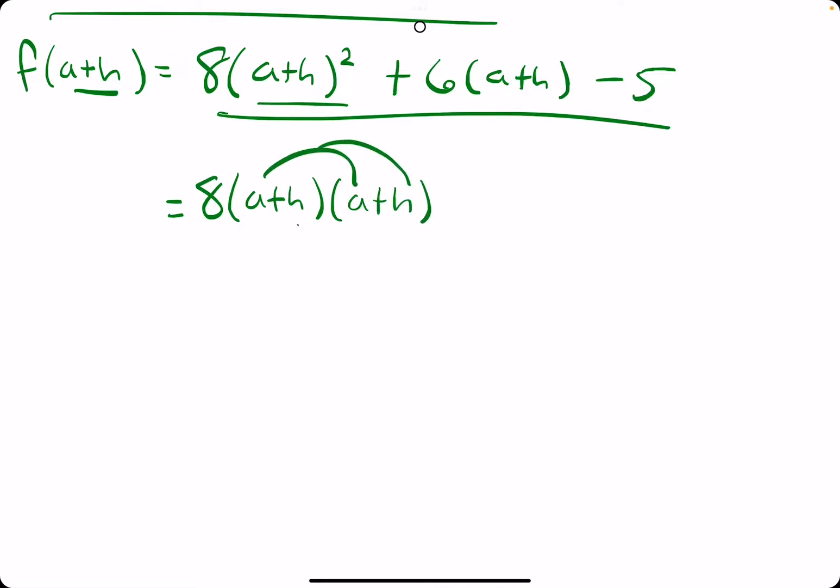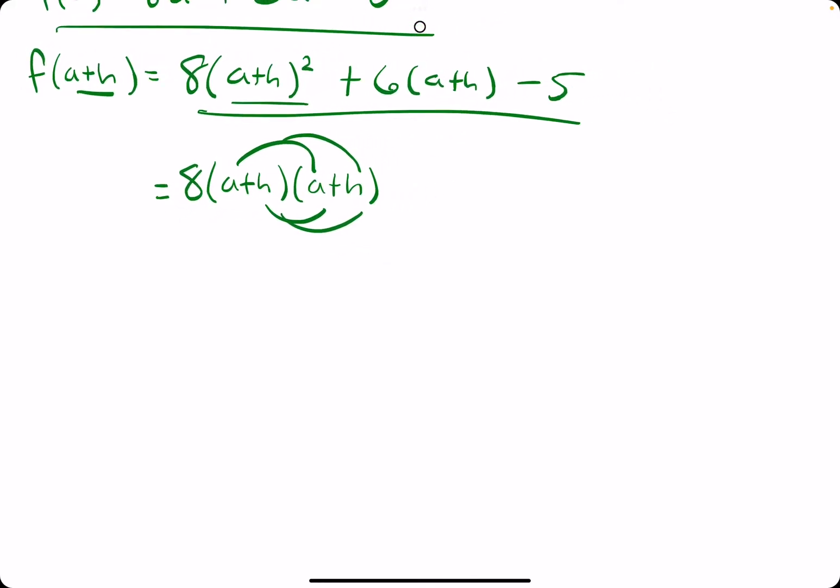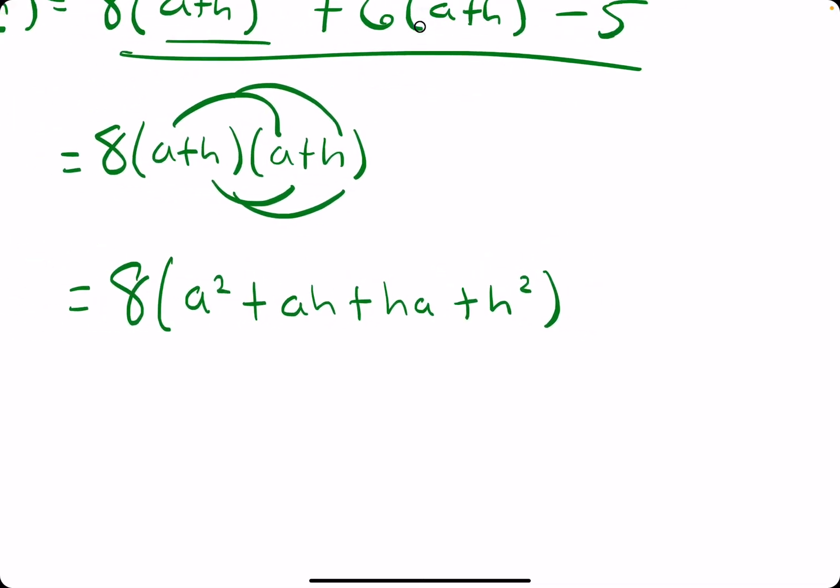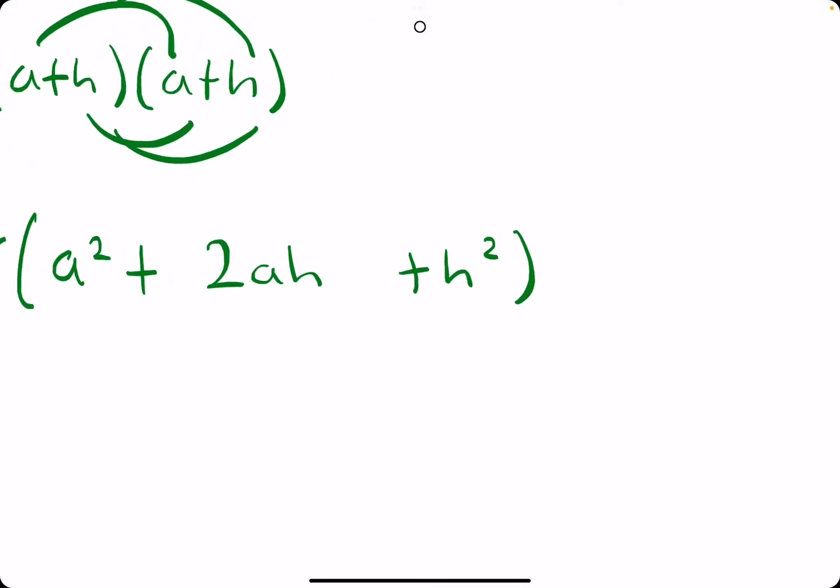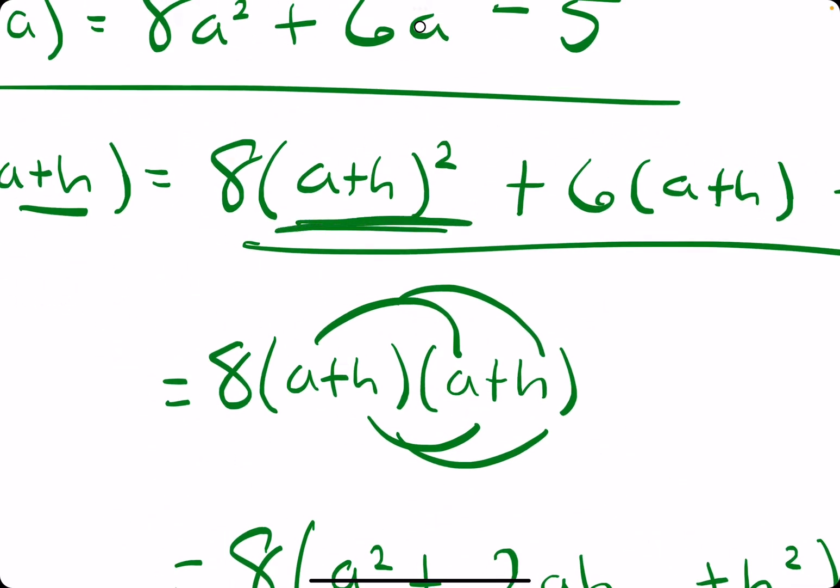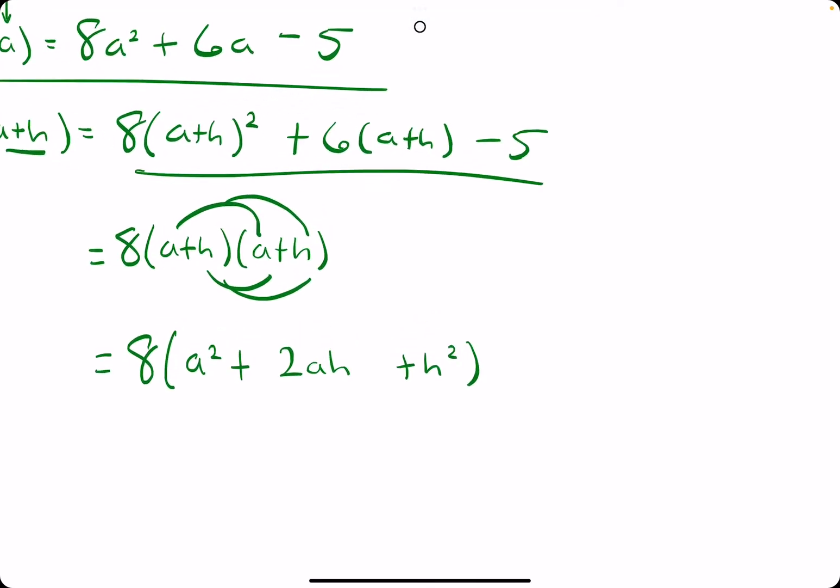When we do this, what changes is we end up having to foil this all out, which ends up giving us three terms, or really four terms that become three terms. But, nonetheless, it's not just two terms. So, when we expand this, we get 8 on the outside, and then a² plus ah plus ha plus h². So, really, ah and ha, I'll go ahead and just call both of those ah. So, really, we have two ah's.